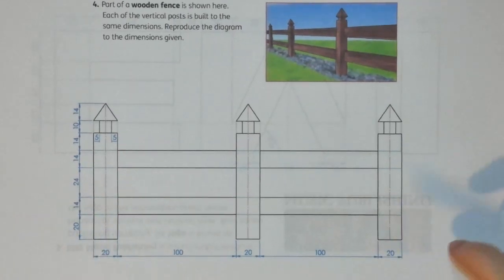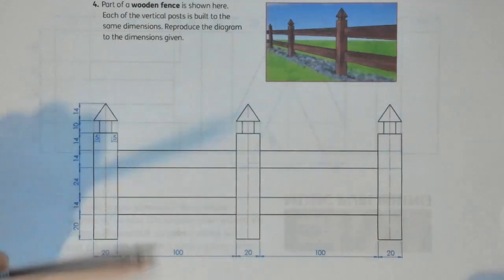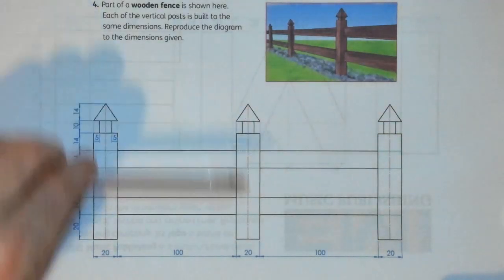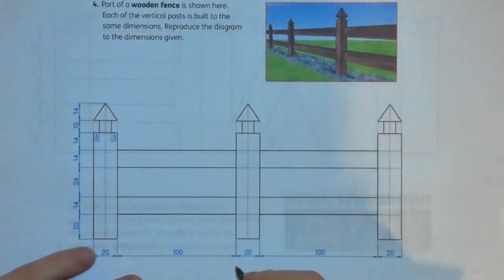The overall length: 20 plus 100 plus 20 plus 100 plus 20 adds up to 260 millimeters going from left to right. And the overall height, 20, 14, all the way up to the top here, and this little point adds up to 110 when you add all of them together.